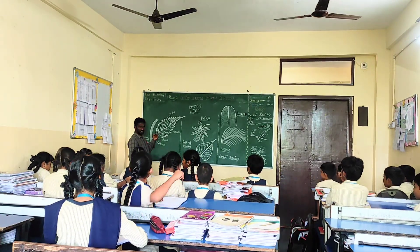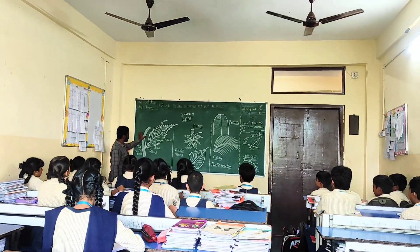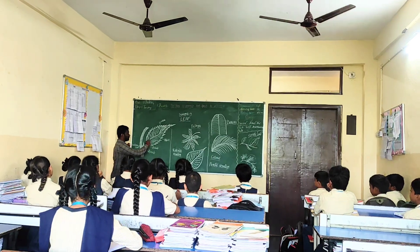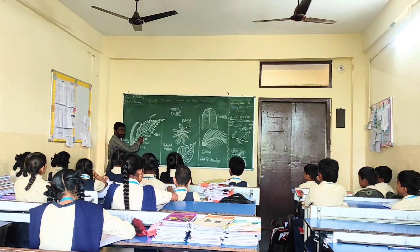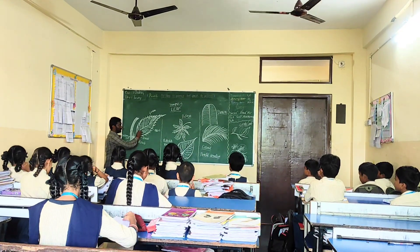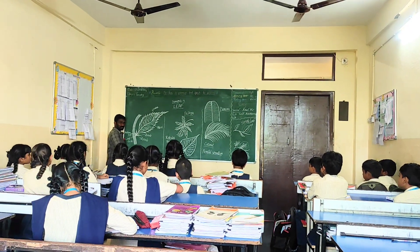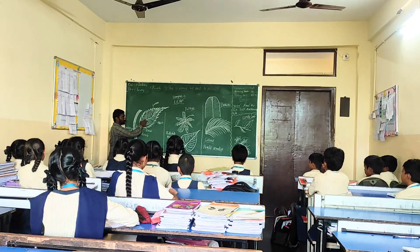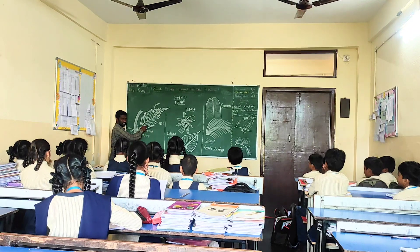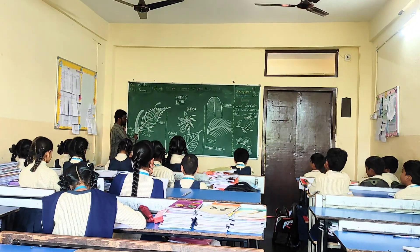This is a leaf. The broad part is the leaf blade, which is green in color. When exposed to sunlight, the process of photosynthesis takes place in this part. This is called the lamina of the leaf. The entire leaf is attached to the stem.